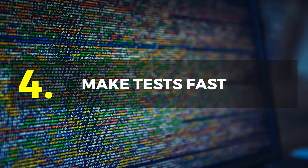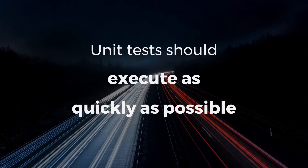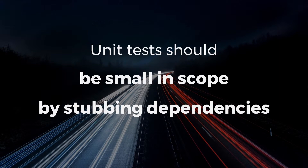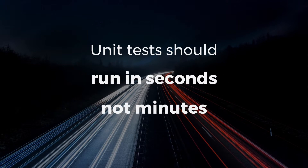Number four: make sure your tests are fast. This is really important for unit tests. They should execute as quickly as possible — that's why we isolate our dependencies, so we can execute quickly without waiting for external services' asynchronous operations to finish. Tests should be really small in scope by stubbing dependencies. We should run in seconds, actually milliseconds if we can, not minutes. Integration tests may take longer, but we should aim to run unit tests in under a second.